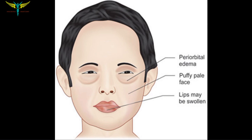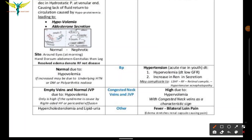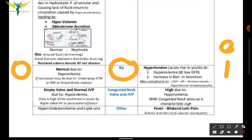Characteristic of nephrotic syndrome is periorbital edema — a puffy face with swollen lips. Blood pressure is normal in nephrotic syndrome due to hypovolemia, though BP can be raised due to underlying systemic diseases like hypertension, diabetes, or polyarteritis nodosa.